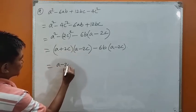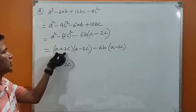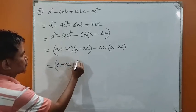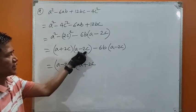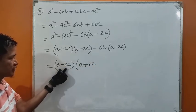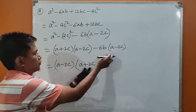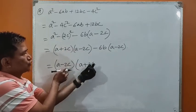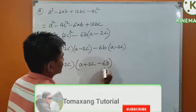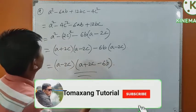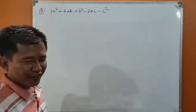Taking out a minus 2c: within the bracket, a plus 2c remains from the first part, and minus 6b remains from the second part. So the final answer for question number 9 is a minus 2c times a plus 2c minus 6b.